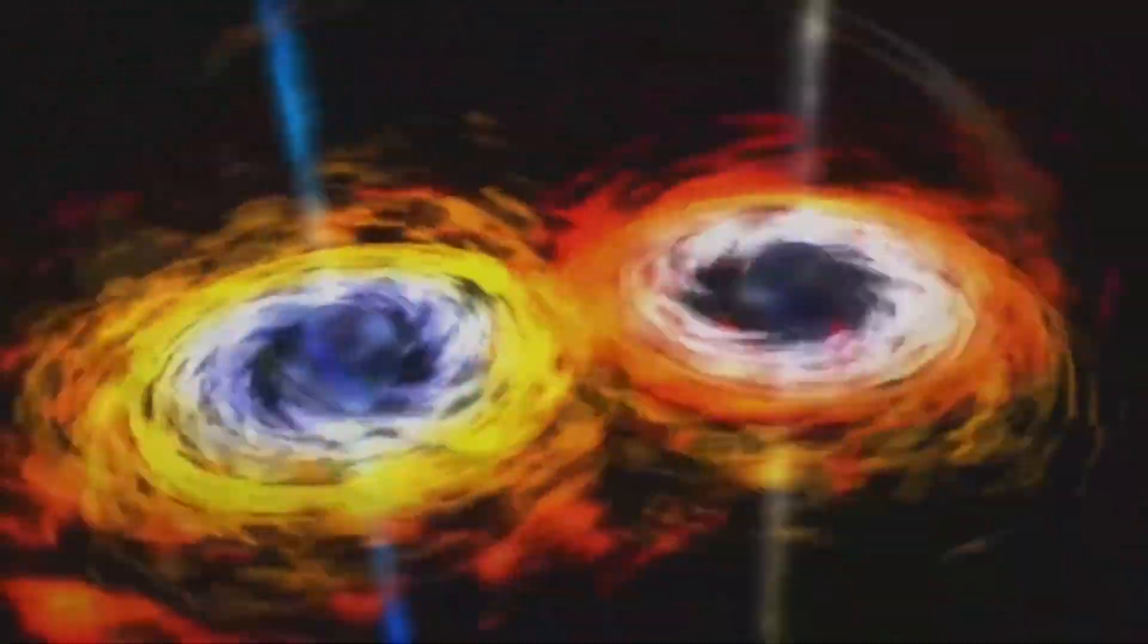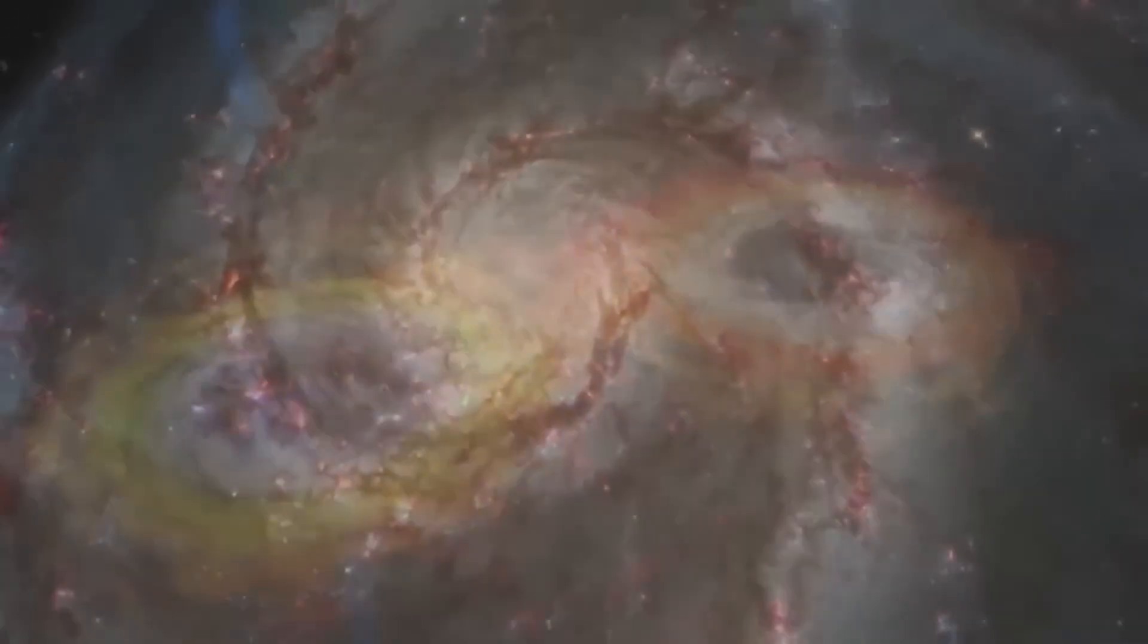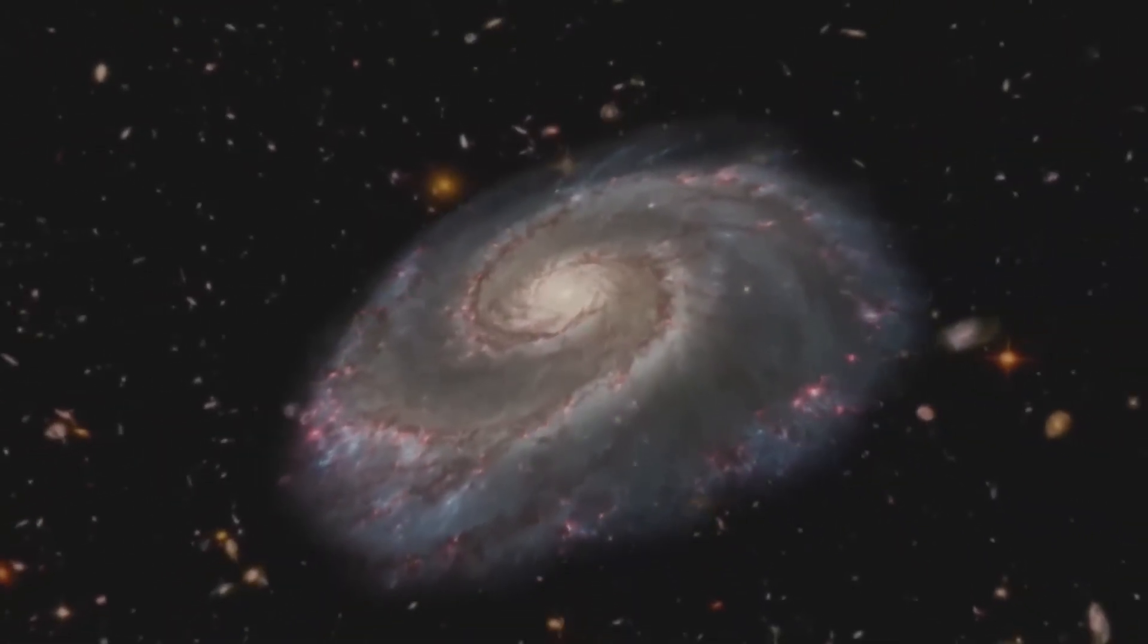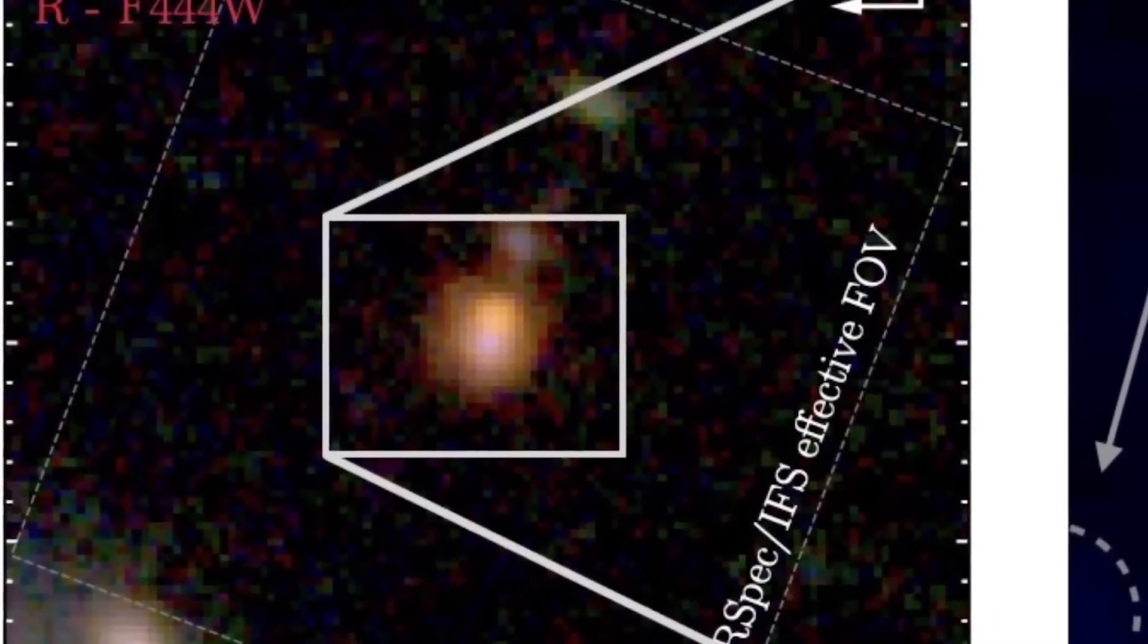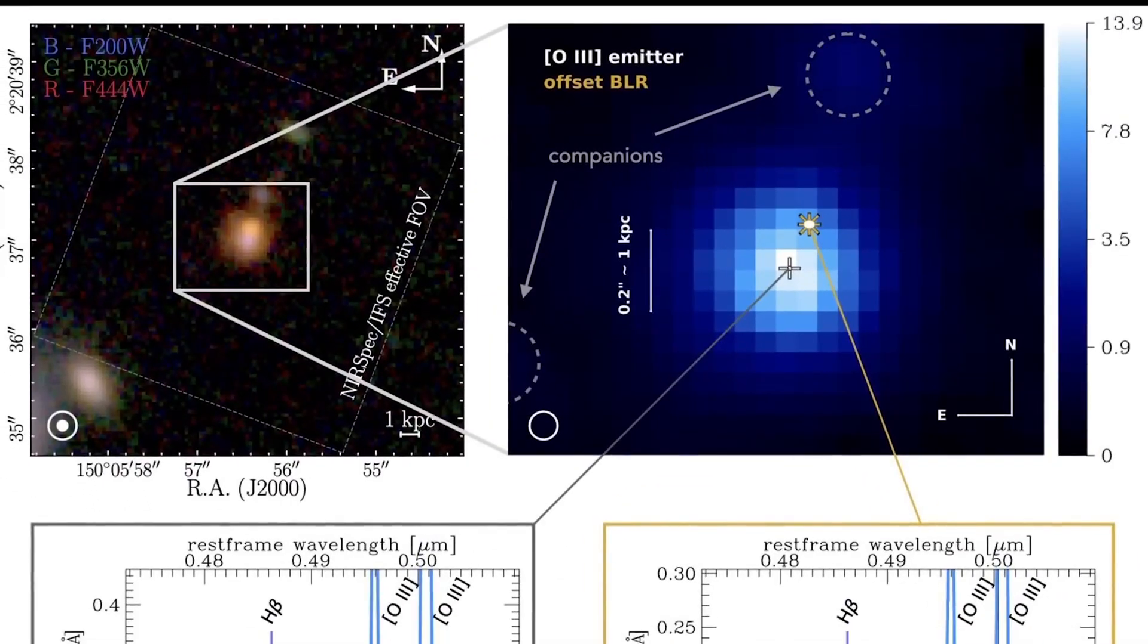At first, scientists believed these inconsistencies would fade as observations became more precise. With better data, they expected the numbers to converge. Instead, the opposite happened. The discrepancies didn't disappear. They sharpened.